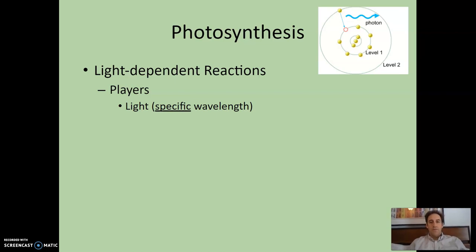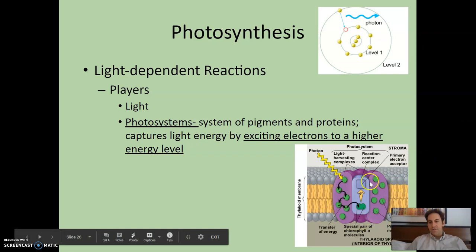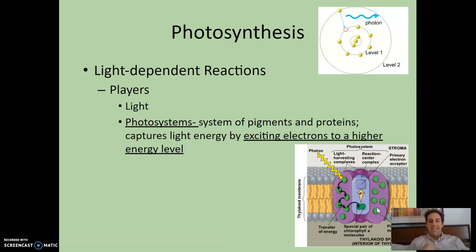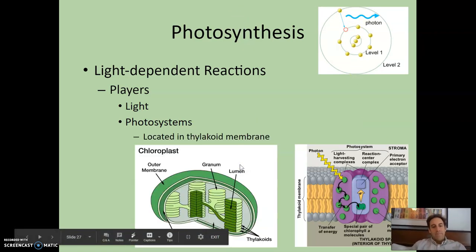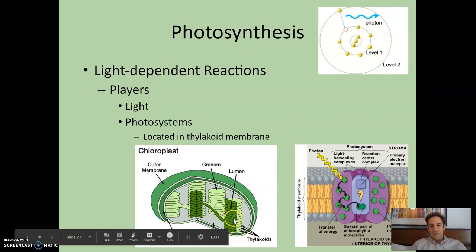The first player is light, which has to be of a very specific wavelength. The second player are photosystems — a system of pigments and proteins. The purple and blue are proteins, and the little green circles are pigments embedded within that protein. Their job is to capture light energy by exciting electrons to a higher energy level. These photosystems are located in the thylakoid membranes — the little disks within the chloroplast. By having lots of disks, we increase the surface area to fit lots of photosystems.